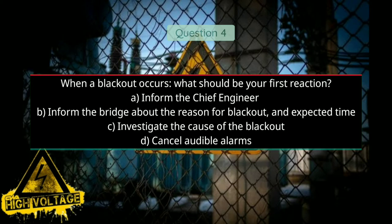Question number four: When a blackout occurs, what should be your first reaction? Option A: inform the chief engineer, Option B: inform the bridge about the reason for blackout and expected time, Option C: investigate the cause of the blackout, and Option D: cancel audible alarms. Correct answer will be A, inform the chief engineer.